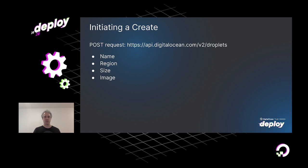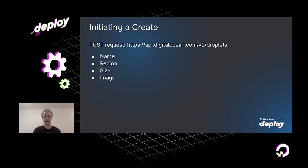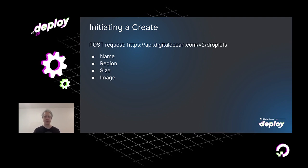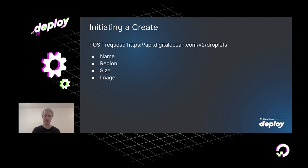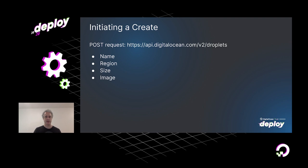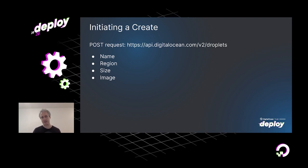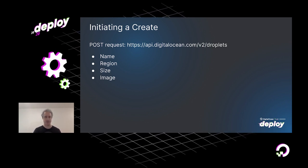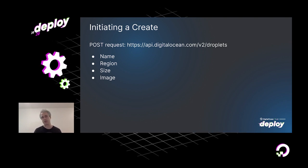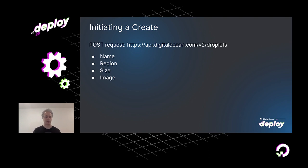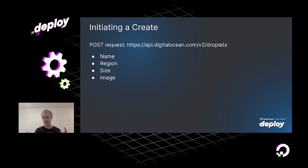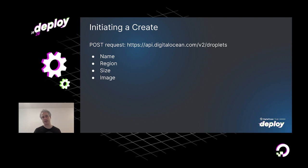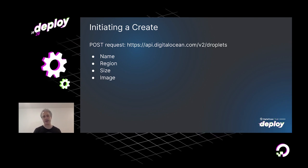In order to initiate a request on our platform via the API, there are four required parameters. First, we need to understand the size of the droplet — the number of CPUs, memory, and so on. We need to know the region, the name of the droplet, and the image that underlies it — the operating system you want to use, such as Ubuntu or CentOS. That comes to us as a POST request to the V2 droplet endpoint at api.digitalocean.com.